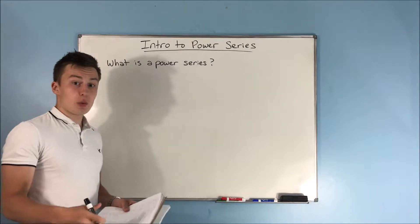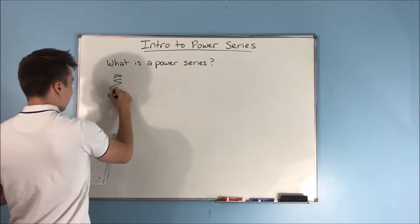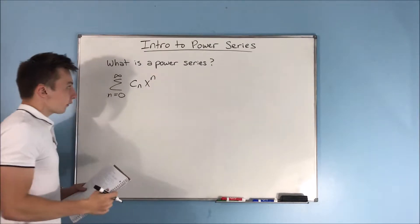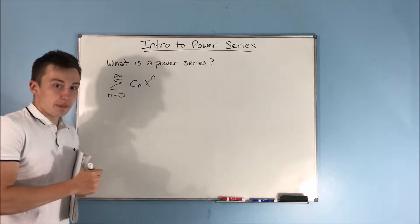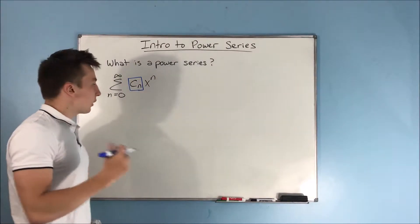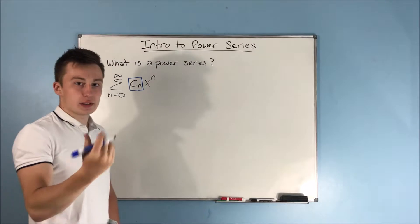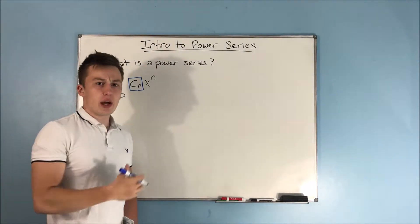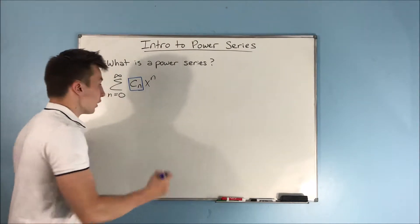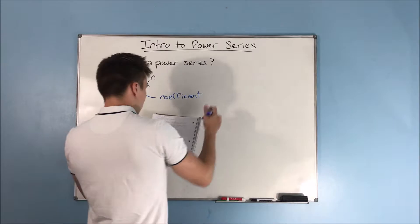The first question is: what are we talking about when we say power series? Well, a power series pretty much takes on the form — the sum from n equals 0 to infinity of c sub n times x to the n. The c sub n here is a coefficient, but notice there is an n in the subscript, meaning that coefficient is changing. So it could be something like (n minus 1) over 2n — when you plug in whatever n is, you get some kind of coefficient for each term.